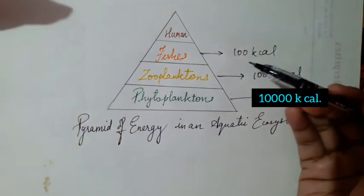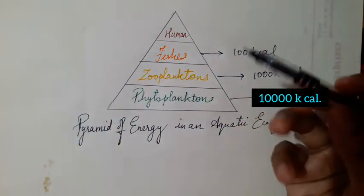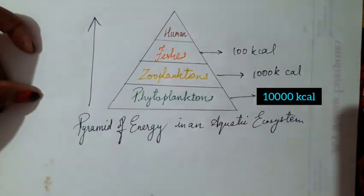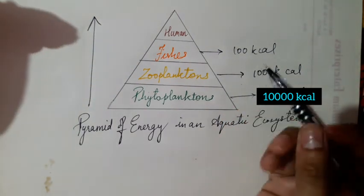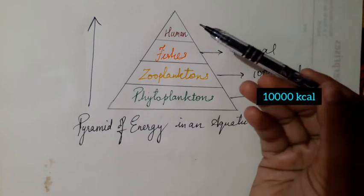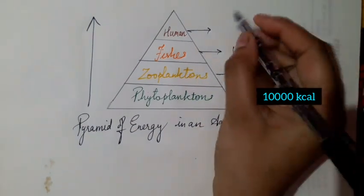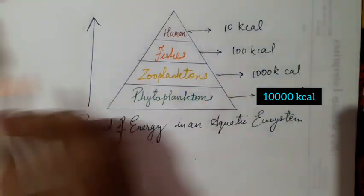Then comes the fish. The fish gets only 100 kilocalories because this fish comes later on after the zooplankton. Energy never destroys—it passes from one form to the other. So the same thing is happening: as it is going upwards to the various trophic levels, the energy also keeps on decreasing. These fishes are eaten by the human beings and therefore they get very less kilocalories, which is only 10 kilocalories.